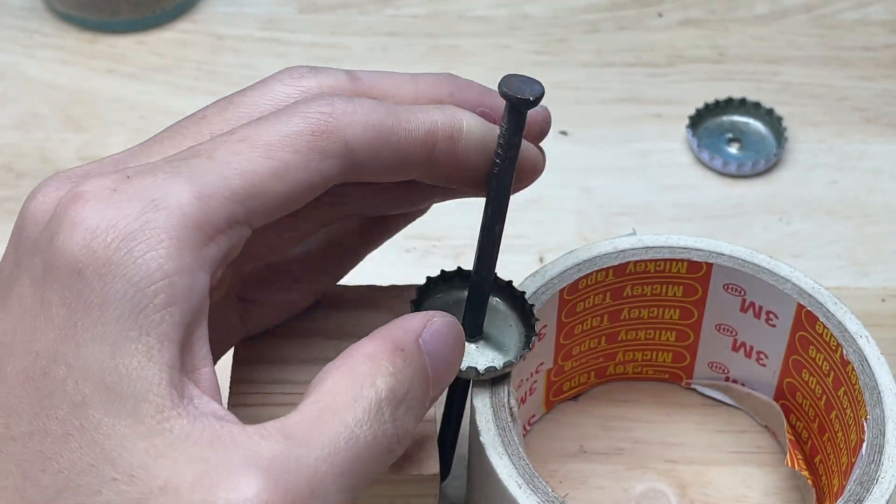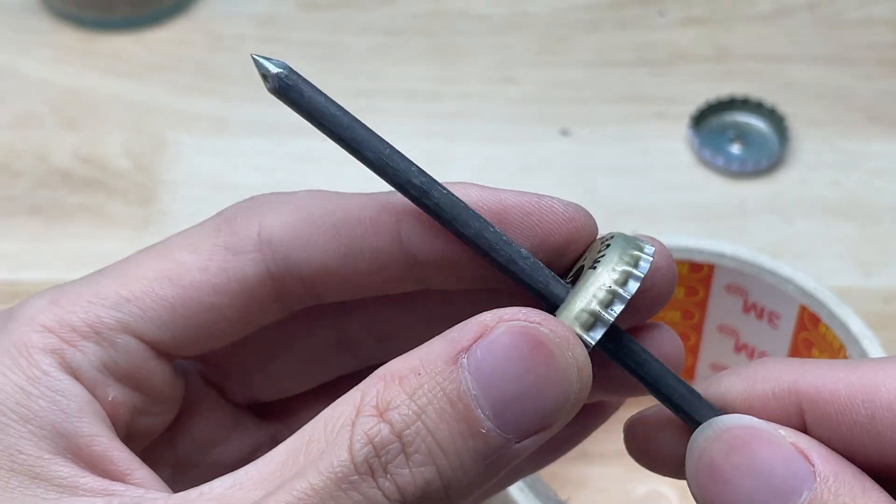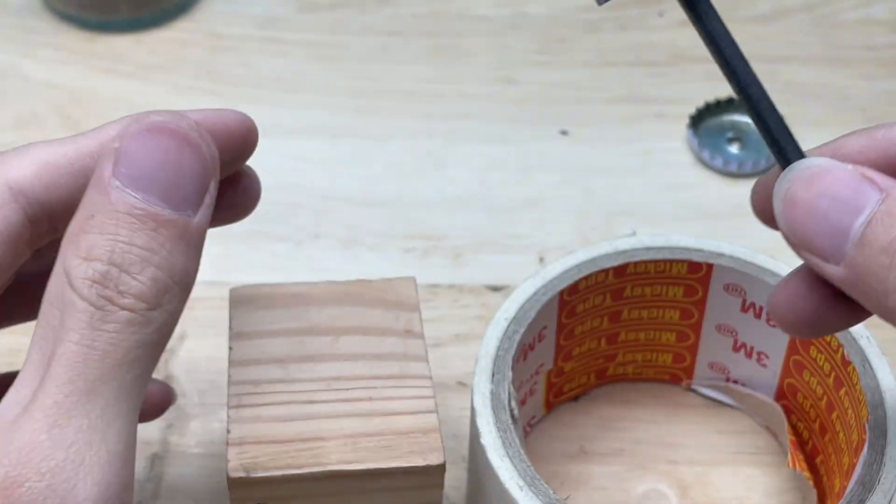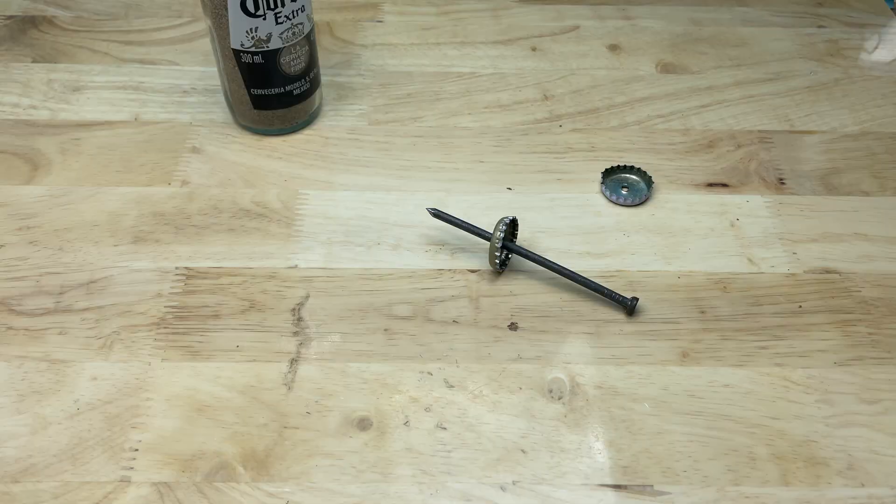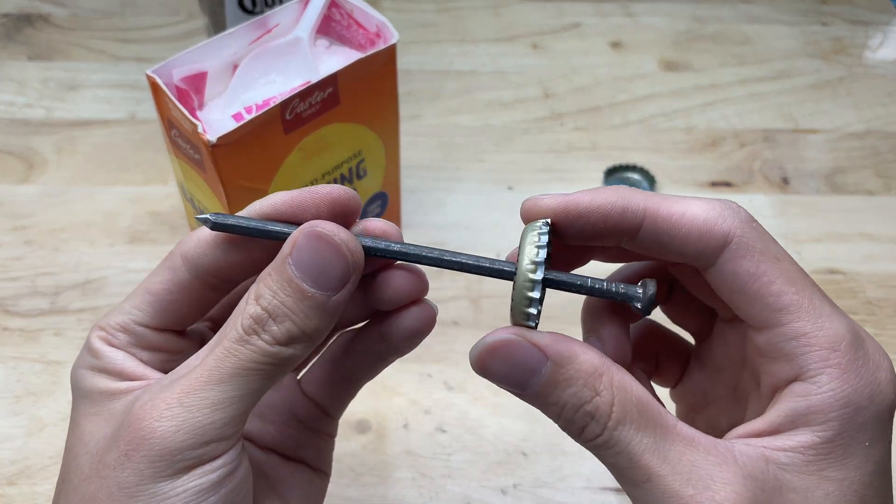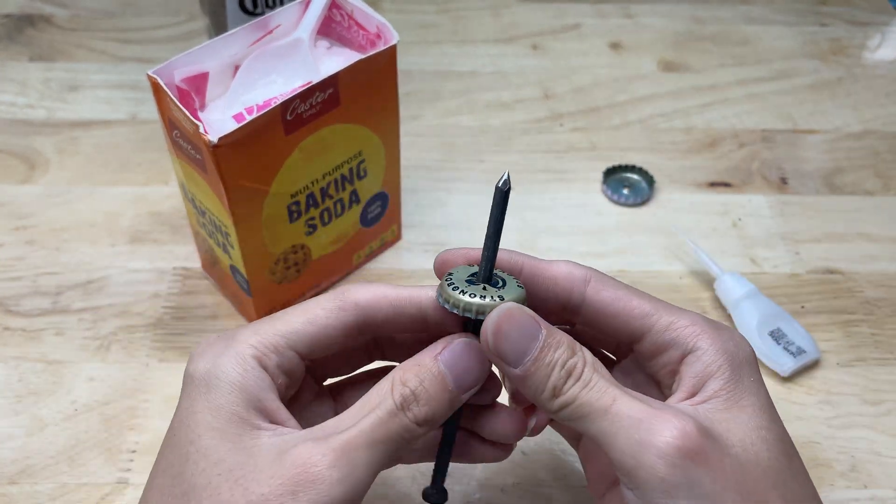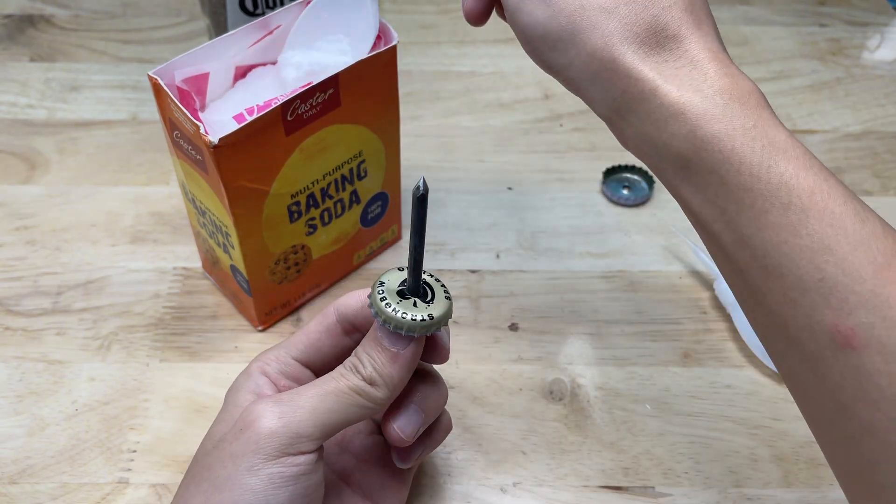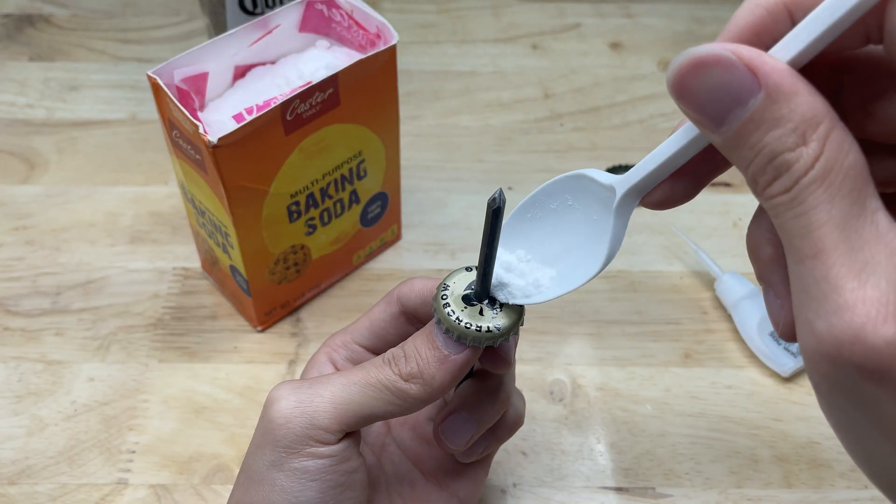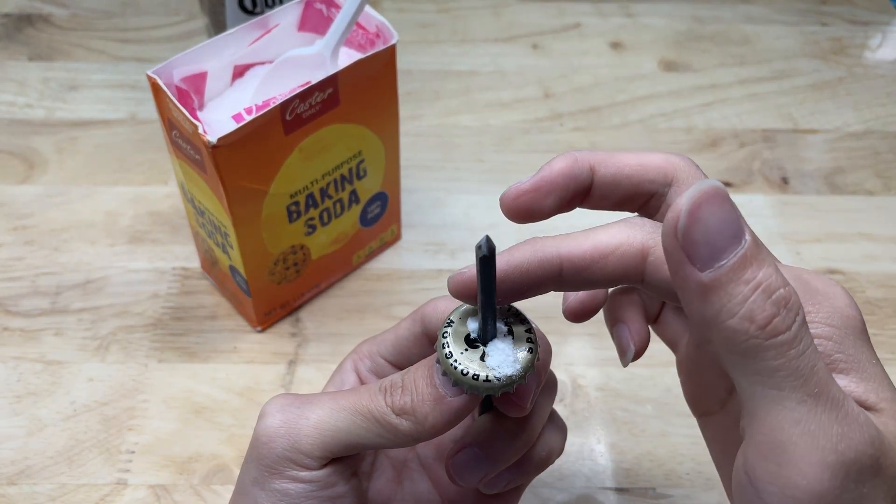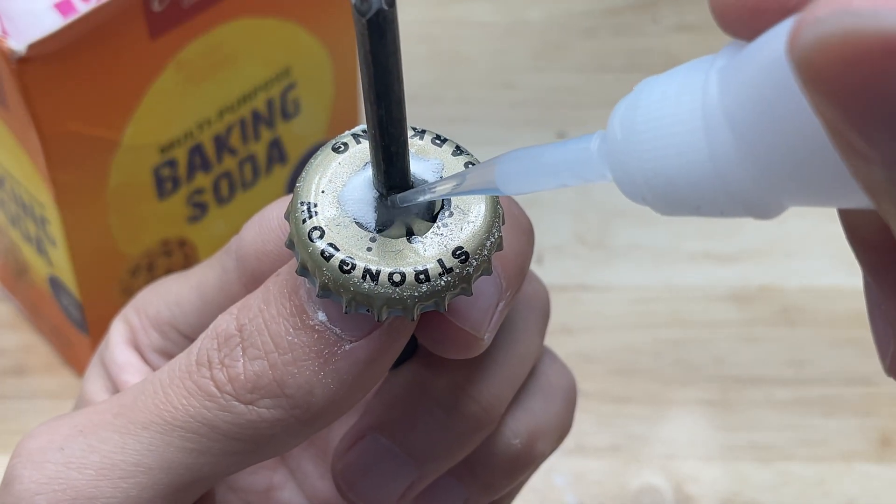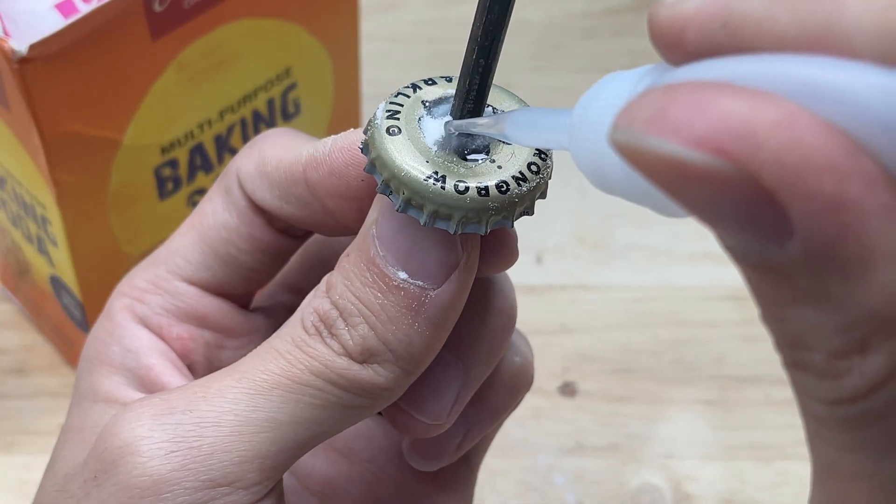I will secure the nail by combining baking soda and super glue. First, I sprinkle a small amount of baking soda over the area, then apply the glue at the contact point between the nail and the bottle cap. This mixture hardens almost instantly, forming a very strong bond that keeps the welding tip firmly in place. Once fully cured, this section becomes rigid and stable, making the entire structure look neater and more reliable.